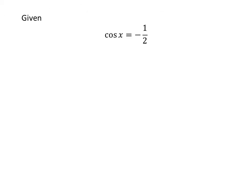We are given that cosine of x is equal to minus half and x lies in the third quadrant. We know the famous trigonometry identity: square of sine of x plus square of cosine of x is equal to 1.